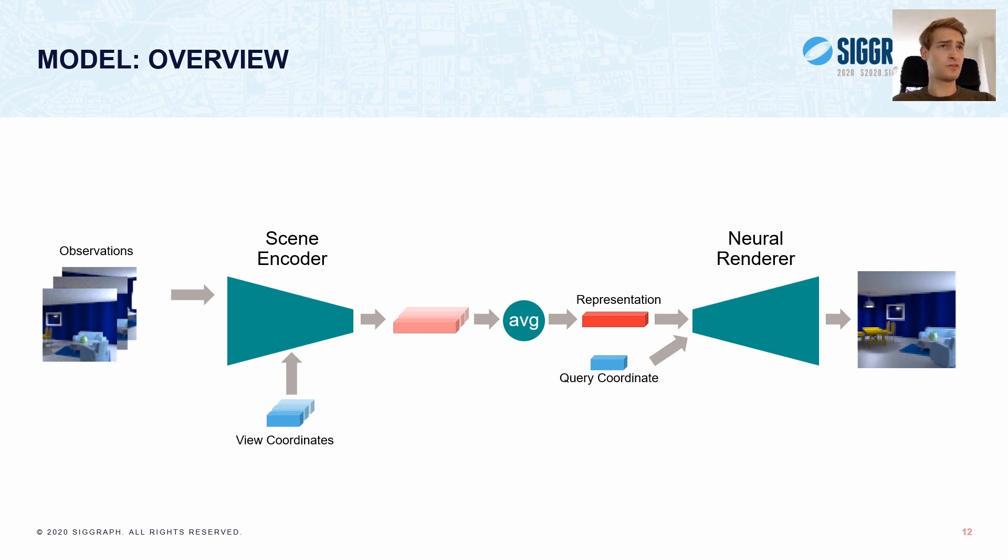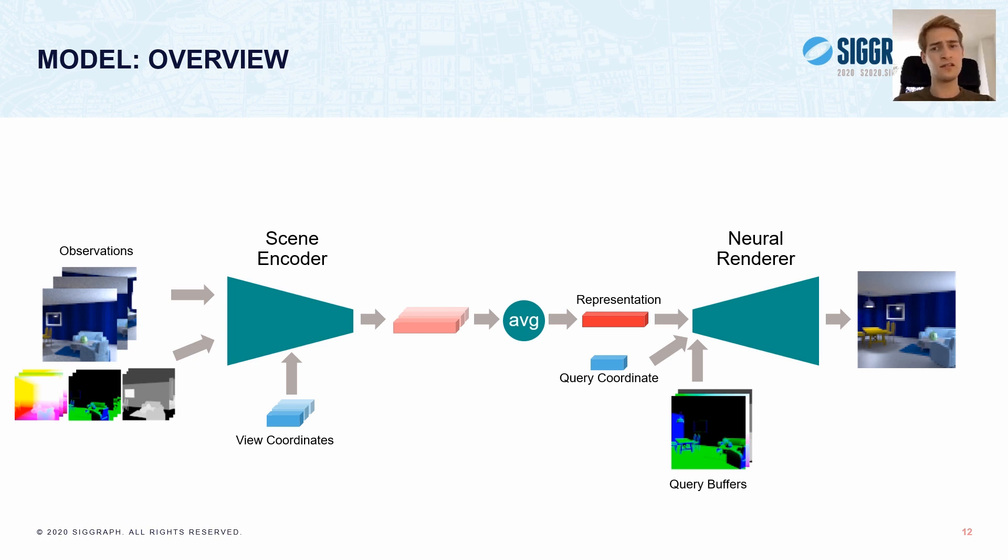So, in our case, we assume that the 3D scene can be rendered using traditional renderers. So we can therefore make the job of the encoder and the neural renderer a bit easier, by providing them with additional image buffers rendered using the traditional renderer. And this significantly speeds up training, and allows us to replace the fairly involved generator network of Eslami and colleagues, with just a simple fully connected model.